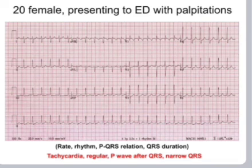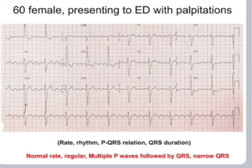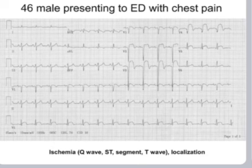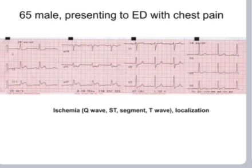Case 3: Regular rhythm with normal rate, multiple P's followed by QRS, and narrow QRS — this is atrial flutter. Case 4: This ECG shows Q waves and ST segment elevation in Leads II, III, and AVF, with reciprocal depression in Lead I and AVL — this is inferior MI. And that is it, thank you.